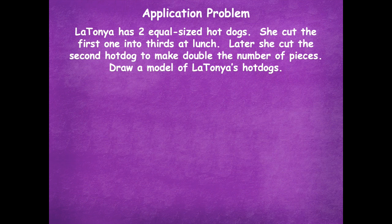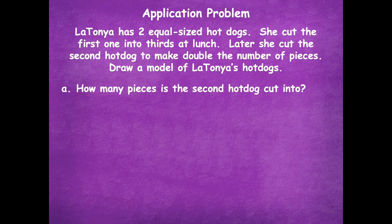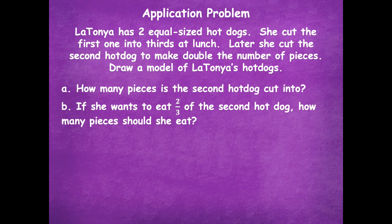It says: LaTonya has two equal-sized hot dogs. She cut the first one into thirds at lunch. Later, she cut the second hot dog to make double the number of pieces. Draw a model of LaTonya's hot dogs. We have to solve two parts. Part A asks: how many pieces is the second hot dog cut into? And part B asks: if she wants to eat two-thirds of the second hot dog, how many pieces should she eat?